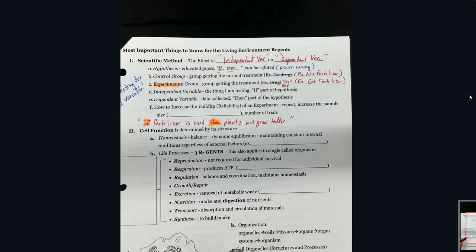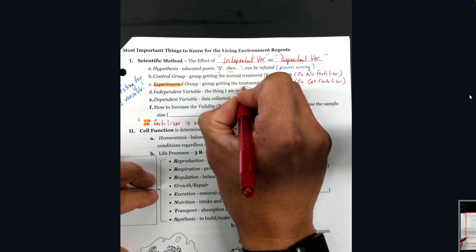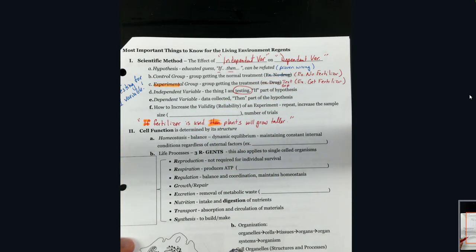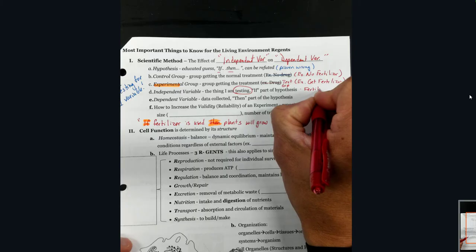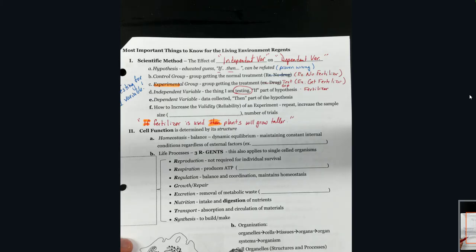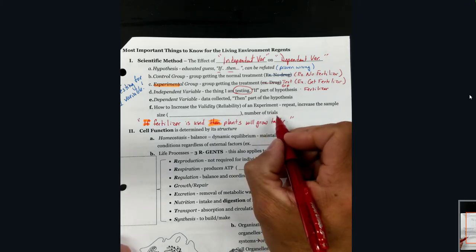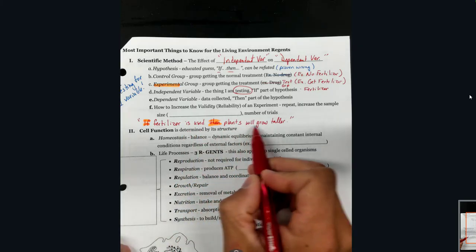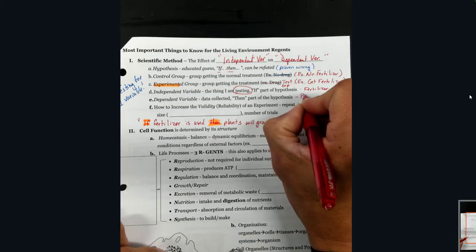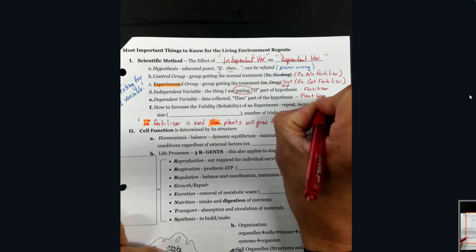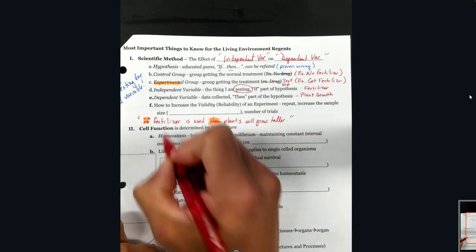The independent variable is the thing you are testing. What we are testing is the use of fertilizer, so that's our independent variable. In our experiment, something is going to depend on giving fertilizer — something is going to happen as a result. That is called our dependent variable. The dependent variable here is going to be plant growth, because the growth of the plant depends on whether the fertilizer is used or not.